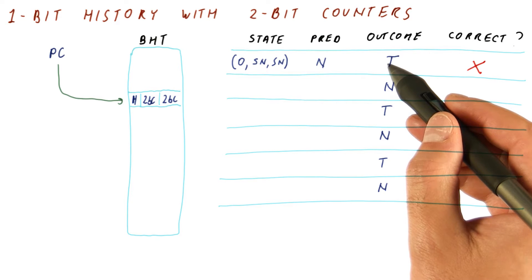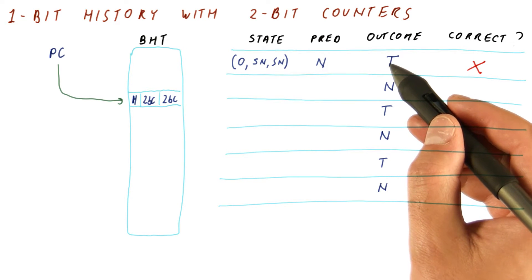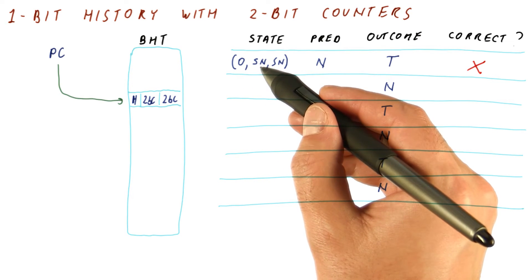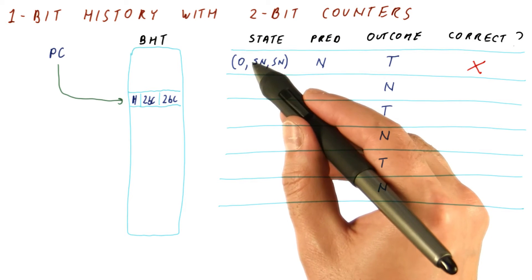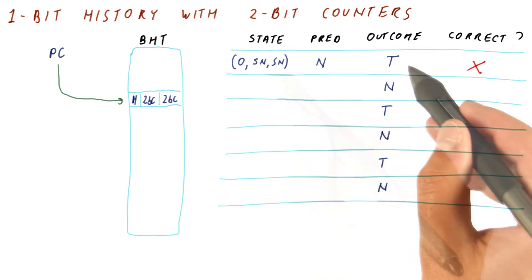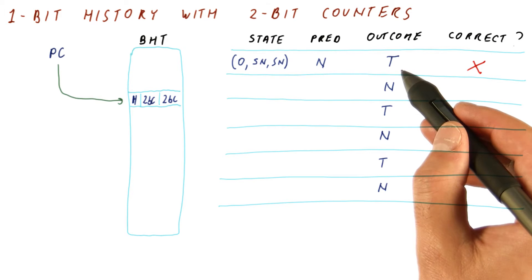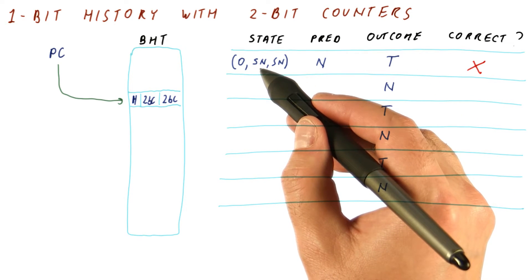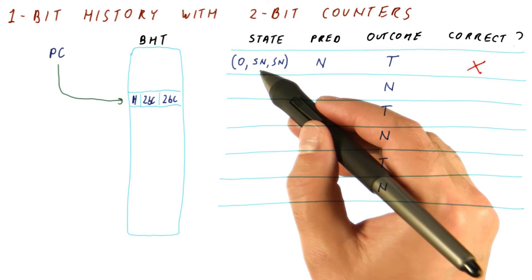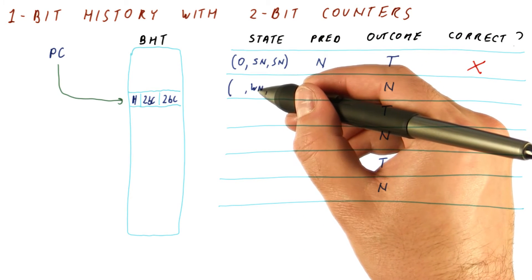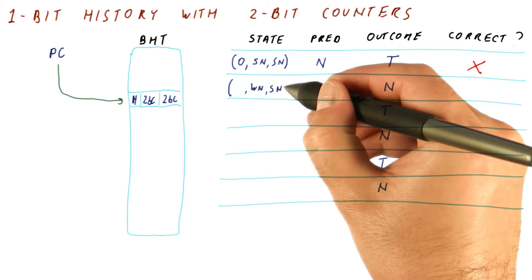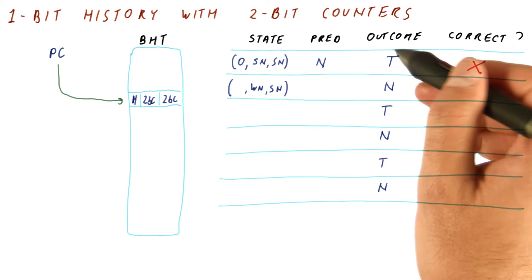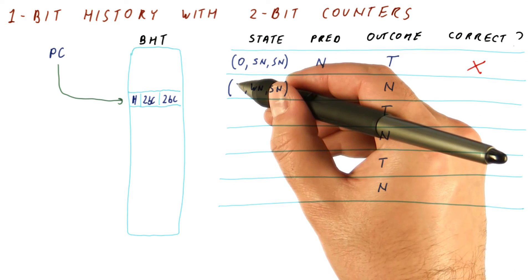Now we will update the state depending on the outcome. The way we update the predictor is to use the history to index into the two counters, meaning we will modify that counter according to the outcome. The outcome is taken, so the first of the two counters will be moved from the strong not taken state to the weak not taken state. This counter is not affected. Then we shift the actual outcome, which was taken, into the history, so the history becomes one.